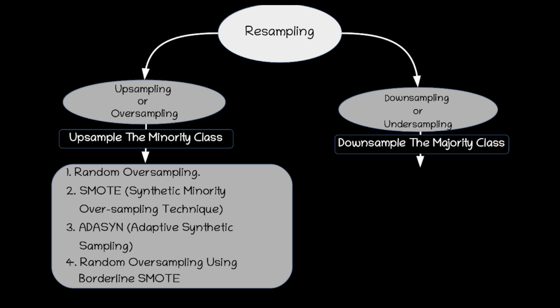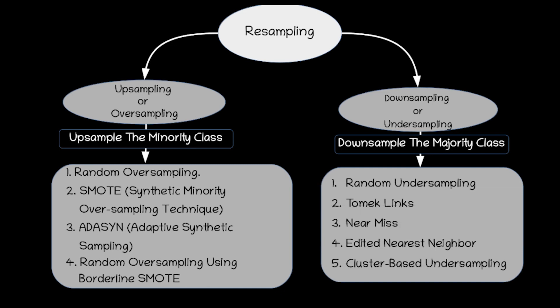Undersampling involves reducing the number of instances in the majority class to match the number of instances in the minority class. Some commonly used undersampling techniques are random undersampling, Tomek Links, Near Miss, Edited Nearest Neighbors, and cluster-based undersampling. In this tutorial we will be focusing on random oversampling and random undersampling; the remaining techniques will be covered in another video.